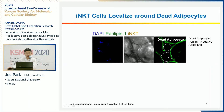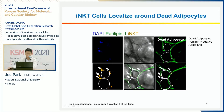To test whether iNKT cells are involved in adipocyte death in obesity, we first investigated whether iNKT cells localize around dead adipocytes. Perilipin-negative adipocytes are considered dead adipocytes compared to live adipocytes that express perilipin 1. As you can see, iNKT cells, shown in yellow, were abundantly found around perilipin-negative dead adipocytes.